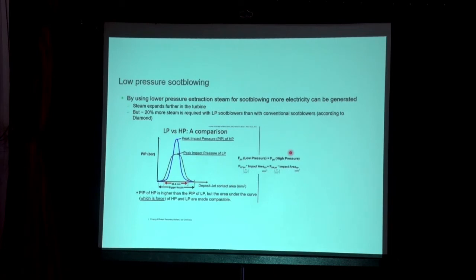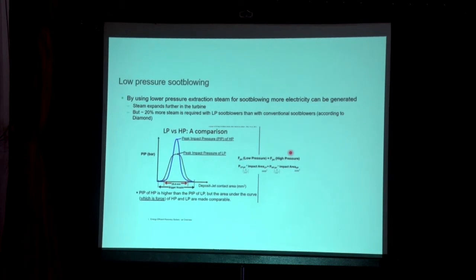For low pressure tube blowers, this is currently at concept level, being evaluated with tube blower suppliers. The idea is to assess the peak impact pressure (PIP) of the tube blowers — an important factor for removing deposits and ash from the recovery boiler — to determine how low pressure tube blowers can be effectively implemented.